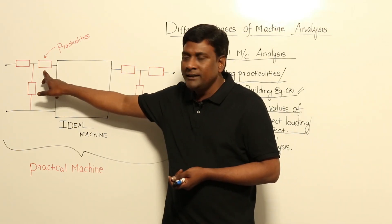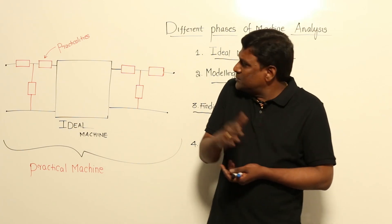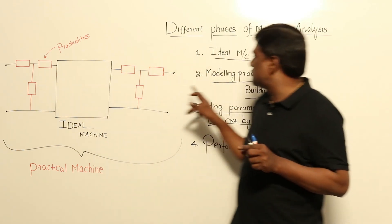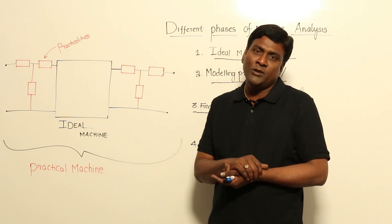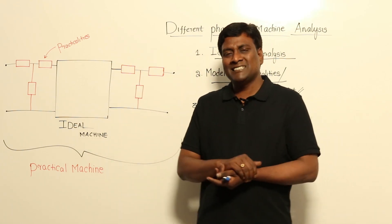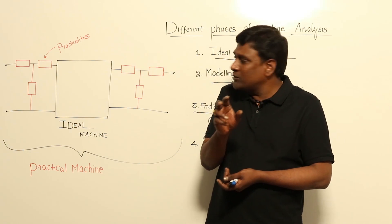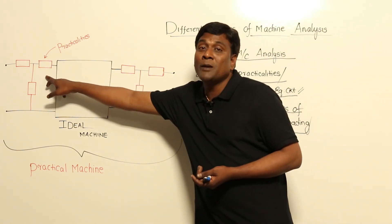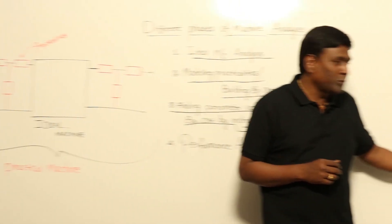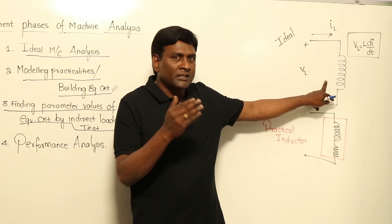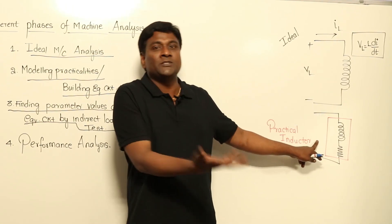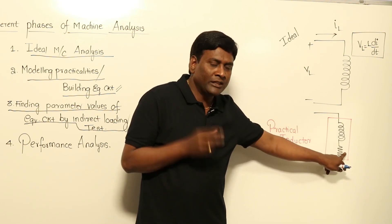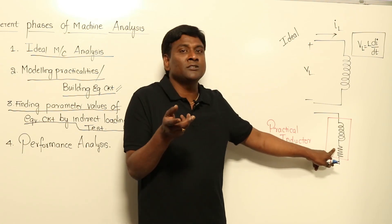For example, copper loss has been modeled as resistance — that is Phase 2. Now, finding how much is the value of that resistance is Phase 3. If a practical machine absorbs X watts as copper loss, I should model the resistance for those X watts. By indirect testing, I find the parameter values — how much is the resistance, how much is the inductance. That is Phase 3.